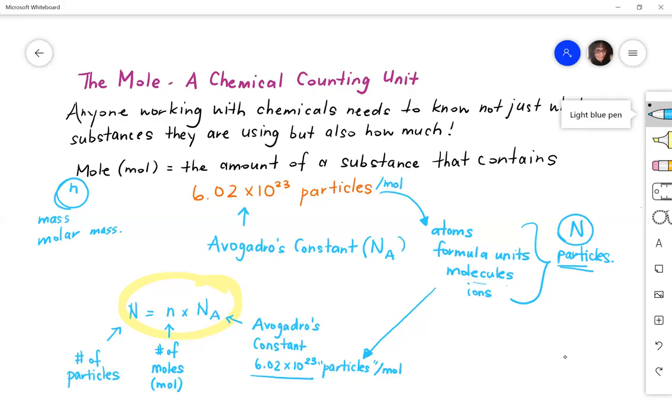You can also use a handy tool. Some people like something called the pyramid or the triangle where the small n is on top. And we have an capital N and an Na. And everything is set up in this triangular format. And they know that capital N is on top. We know that N is equal to n times Na.